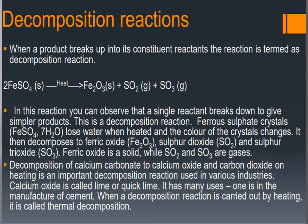Decomposition of calcium carbonate to calcium oxide and carbon dioxide on heating is an important decomposition reaction used in various industries. Calcium oxide is called lime or quick lime, and has many uses, one being in the manufacture of cement. When a decomposition reaction is carried out by heating, it is called thermal decomposition. We are going to discuss two examples of thermal decomposition.